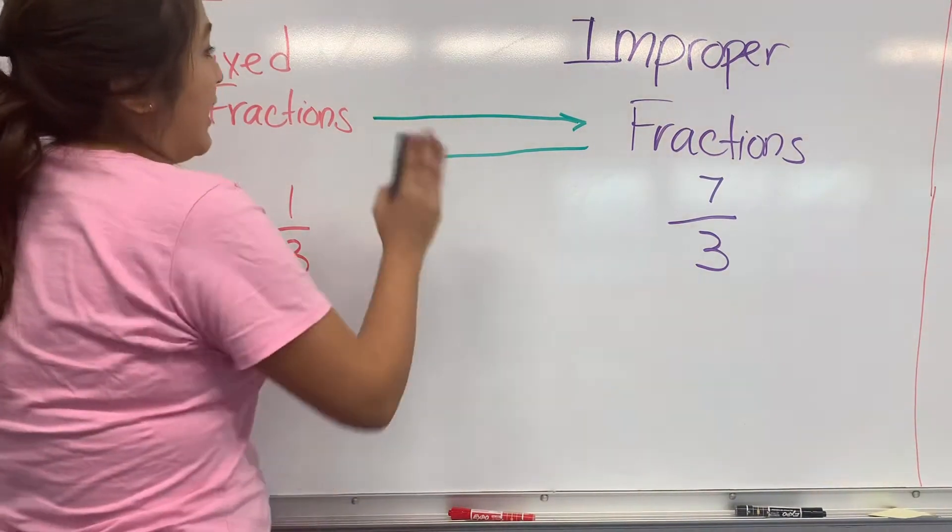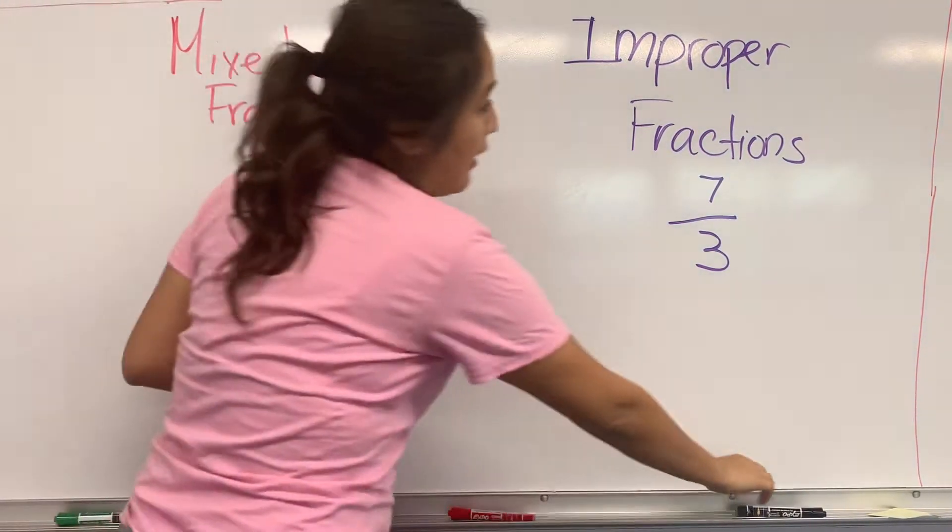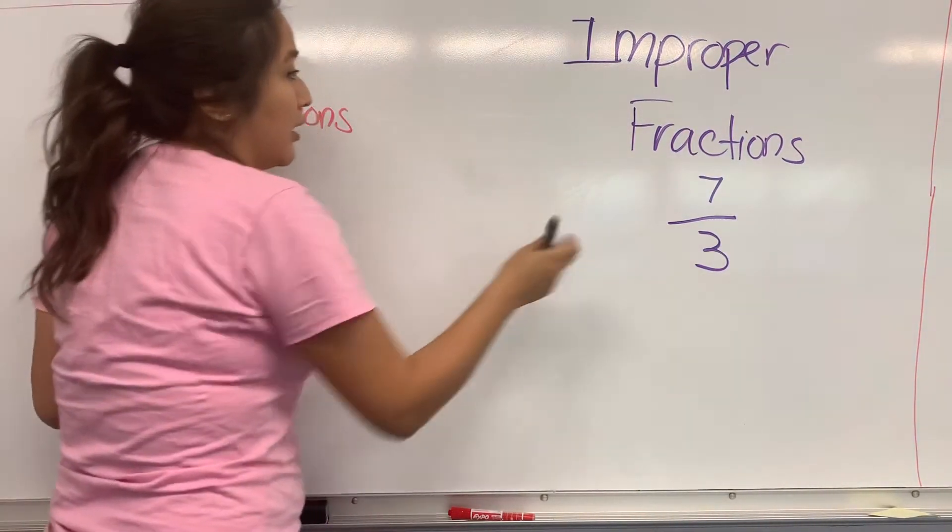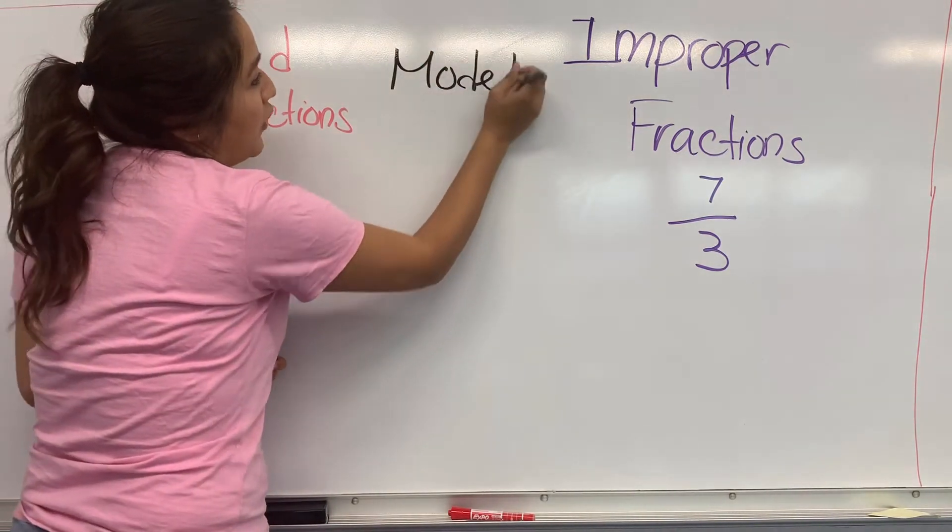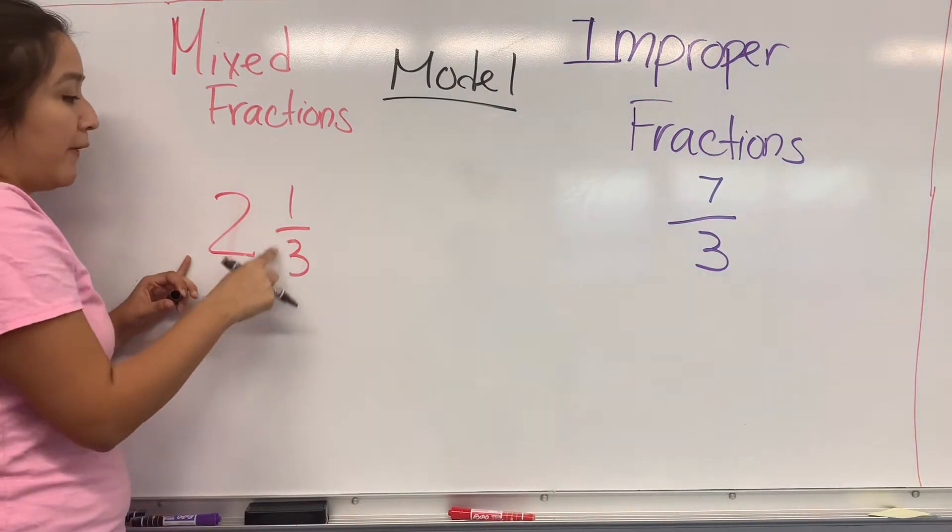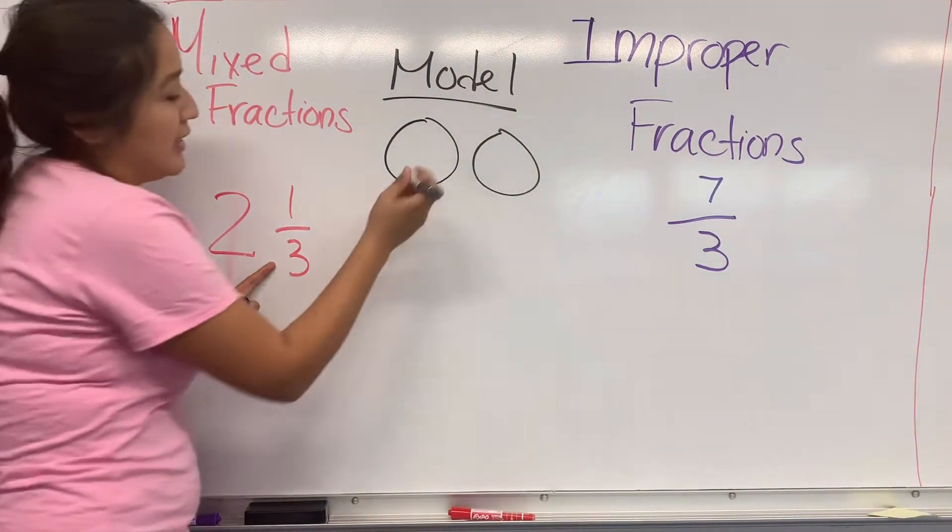So in order to go from a mixed fraction to improper, I'm going to show you a model of what that looks like. So I'm going to draw out my 2 1/3. I'm going to draw out my two whole numbers, and I've broken them up into thirds because this is what my fraction is here.